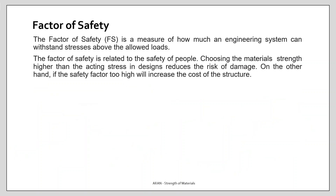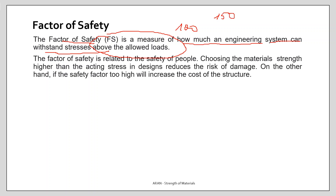The factor of safety is a measure of how much an engineering system can withstand stresses above the allowed loads. For example, if you have an allowed load of 100 and in exceptional conditions the system can withstand 150, then you have a safety factor of 1.5.